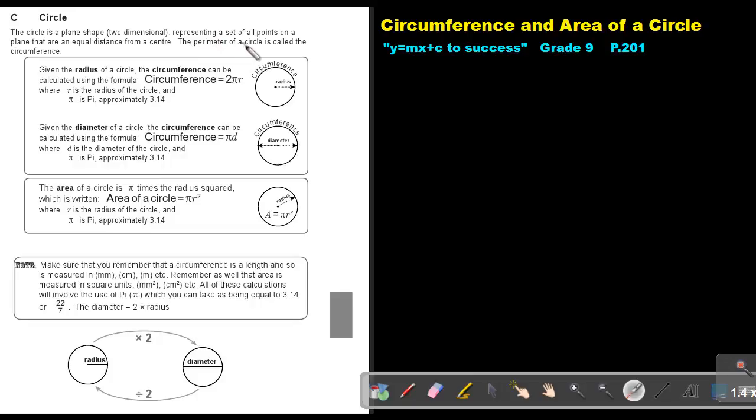The perimeter of a circle is called the circumference. Given that the radius of a circle, the circumference can be calculated using the formula circumference equals 2πr, where r is the radius of the circle from the center to the circumference and π is approximately 3.14.